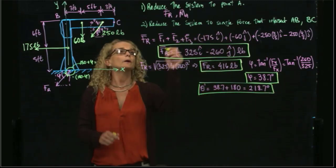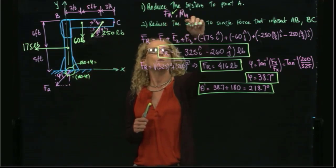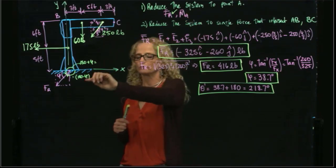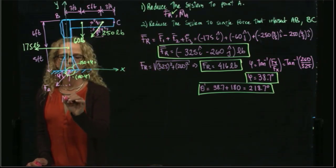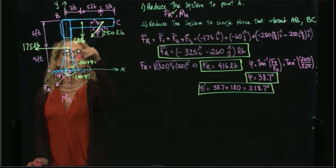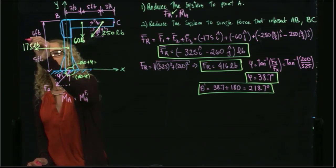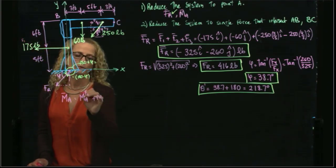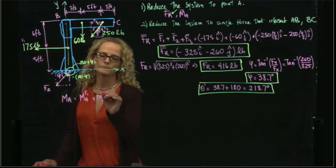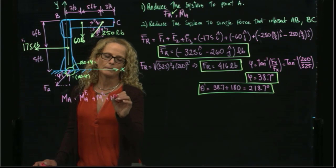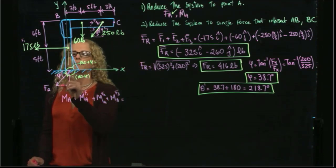So we were able to find the first part of the problem; now we have to find the moment with respect to A. The moment with respect to A will be the moment produced by each of these forces — so it will be the moment produced by F1, plus F2, plus MA of F3. I will do it with a scalar approach. What is the moment produced by the first force?